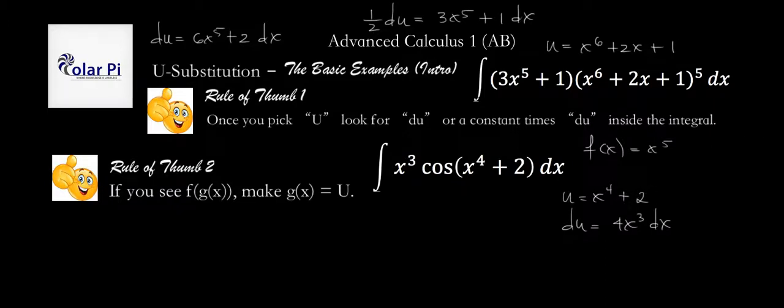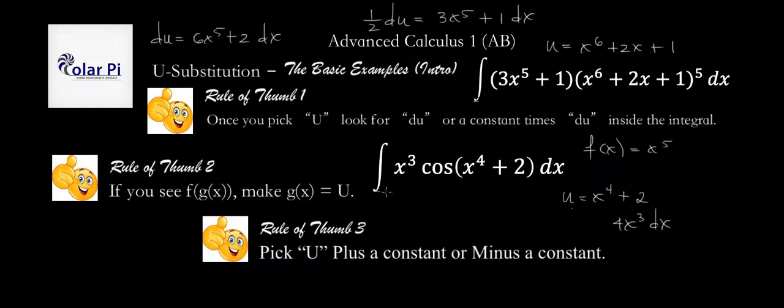And that's actually what our third and final rule of thumb is going to say, which is that when we're looking to pick a u, if there's a constant that's added or subtracted from u, then we should include the constant as part of our u. That's what this third rule of thumb is articulating.